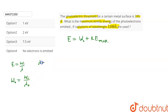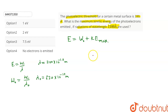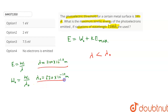It is given that lambda is equal to 1100 × 10⁻¹⁰ meters and lambda naught is equal to 330 × 10⁻¹⁰ meters. For photoelectric emission to take place, lambda should be less than lambda naught. We can see that lambda is 1100 angstrom and lambda naught is 330 angstrom, so lambda naught is less than lambda.